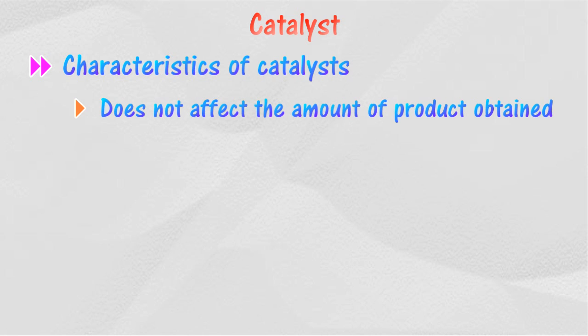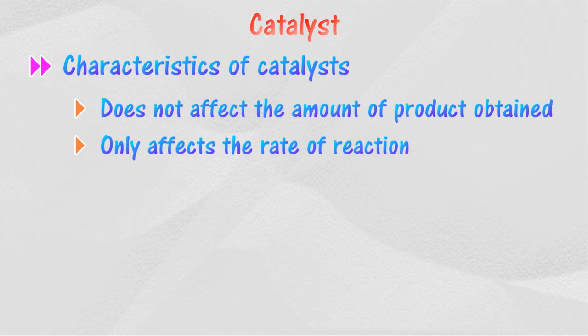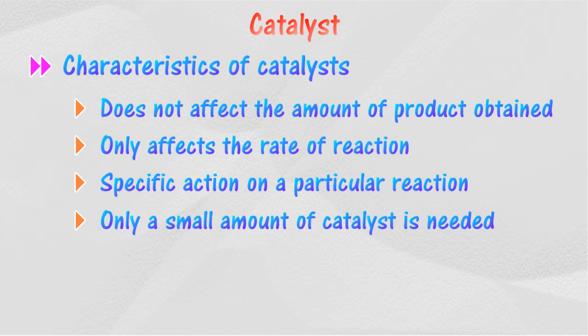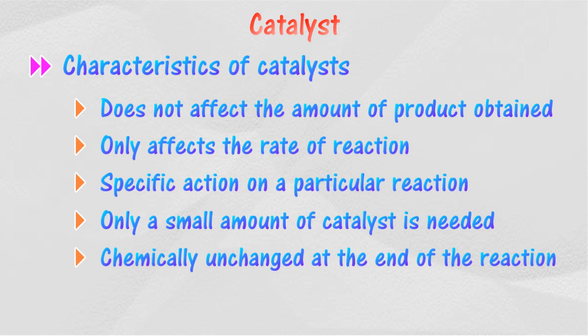A catalyst will change the rate of reaction. Characteristics of catalysts: a catalyst does not affect the amount of product obtained. A positive catalyst will increase the rate of reaction while a negative catalyst will decrease the rate of reaction. The action of a catalyst is specific, and only a small amount of catalyst is needed to change the rate of reaction.